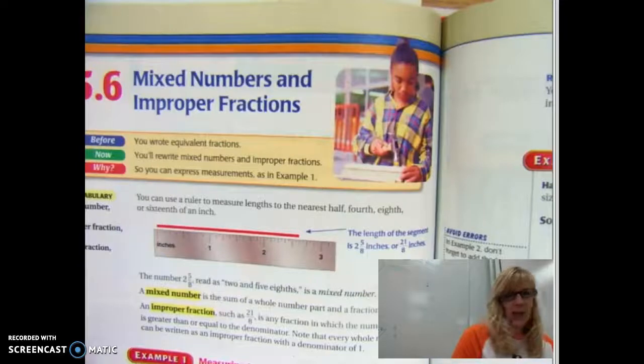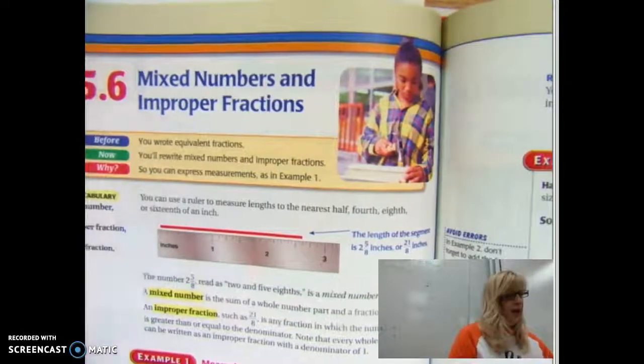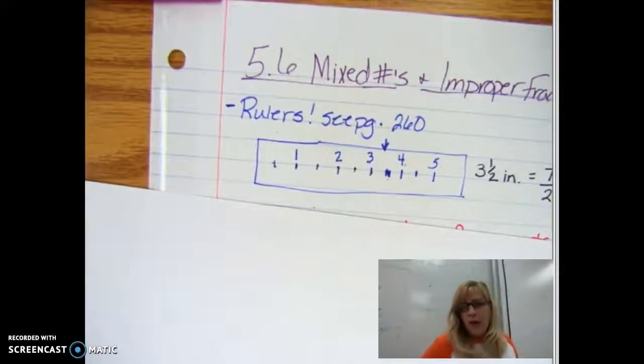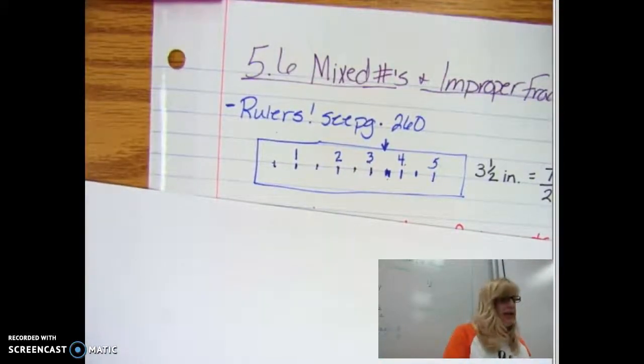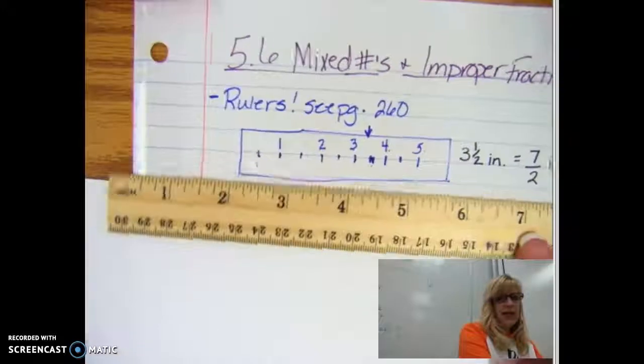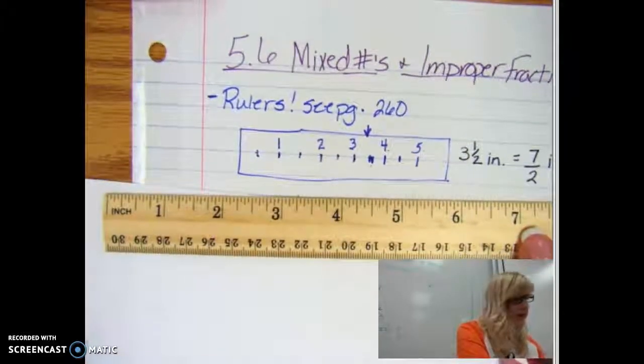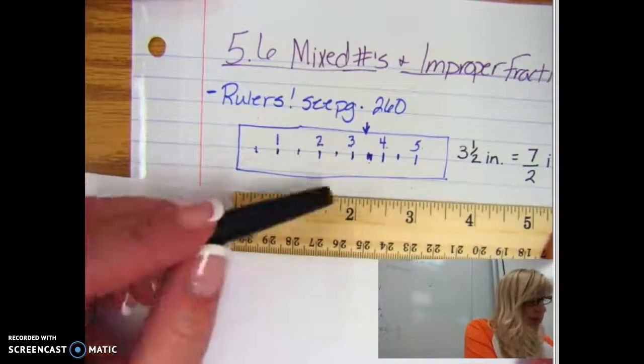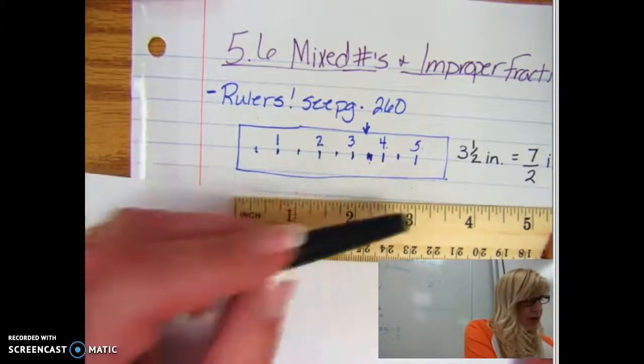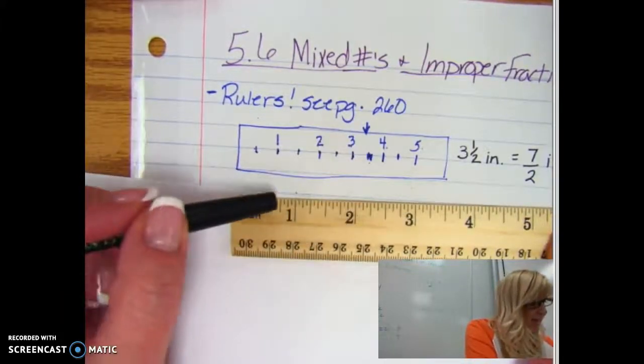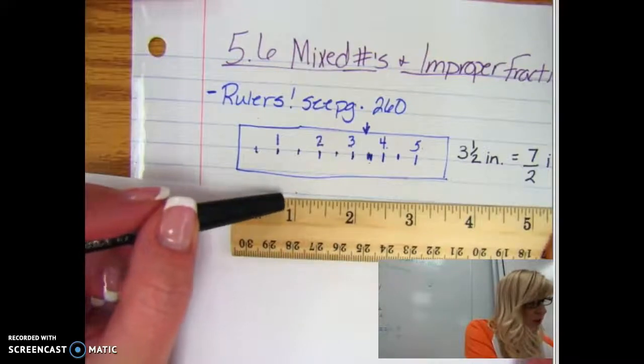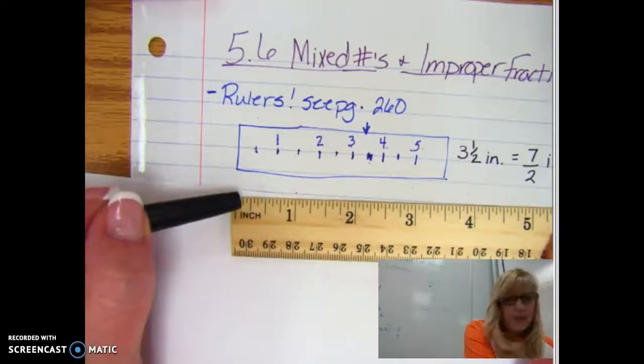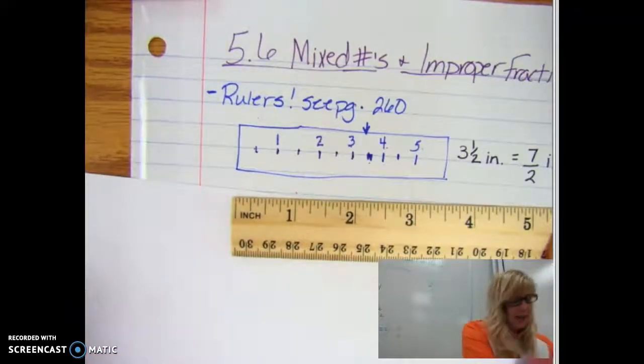You can see how looking at a ruler might help, and you are more than welcome to grab a ruler during your assignment to take a look at how that works. It's maybe easier to see here where the half inches are the big lines in the middle, then you go down to the fourths, and then you go down even further to the eighths, and these little itty bitty guys, those are sixteenths.